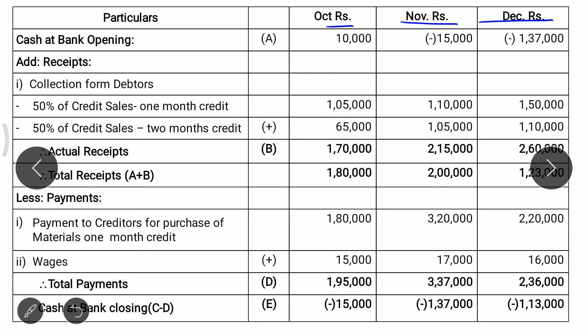For October, opening balance is Rs. 10,000. Now we add receipts — collection from debtors. First: 50% of credit sales with 2 months credit — October Rs. 1,05,000, November Rs. 1,10,000, December Rs. 1,50,000. Second: 50% of credit sales with 3 months credit — October Rs. 65,000, November Rs. 1,05,000, December Rs. 1,10,000. Adding these gives total receipts: October Rs. 1,70,000, November Rs. 2,15,000, and December Rs. 2,60,000.